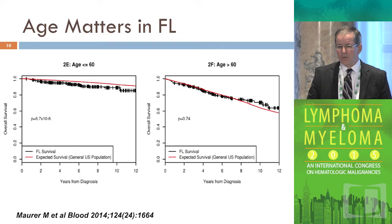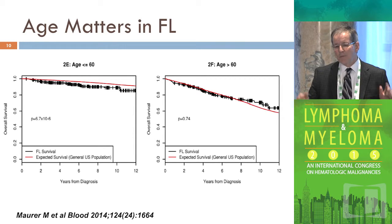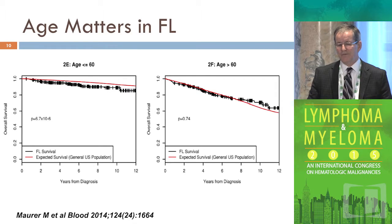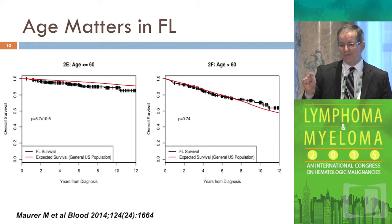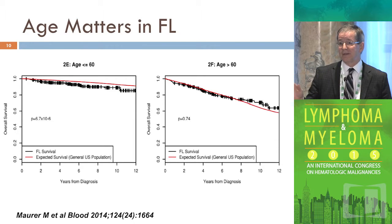This is data from our upper Midwest molecular epidemiology database, also validated with a French database. What this shows is really important: if your patient is sitting there with newly diagnosed follicular lymphoma and they're over 60, they are going to live out their life with the same life expectancy as anyone else — they may live with their lymphoma but die at the same rate as anybody else, at least in the United States and in France.